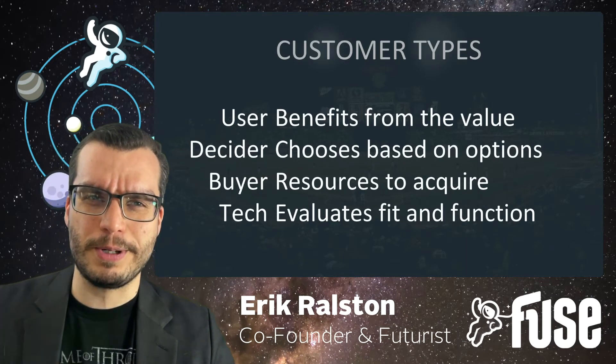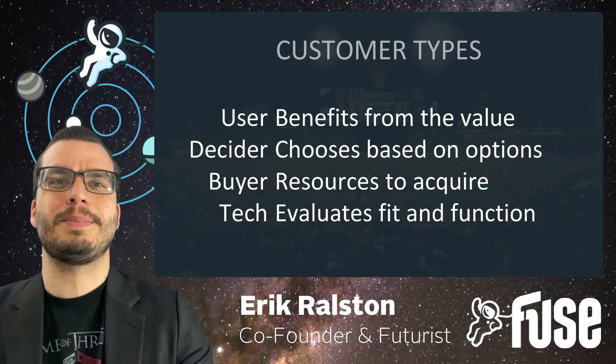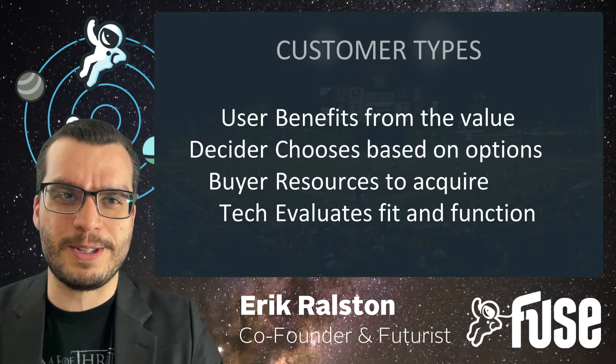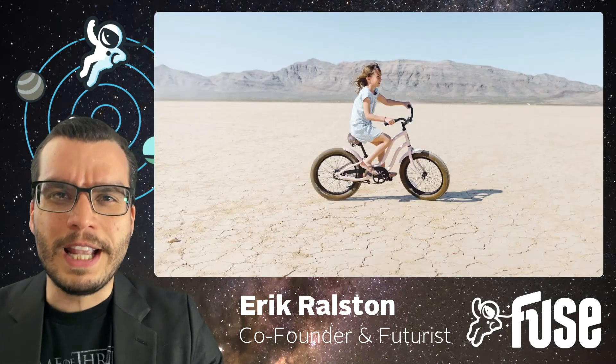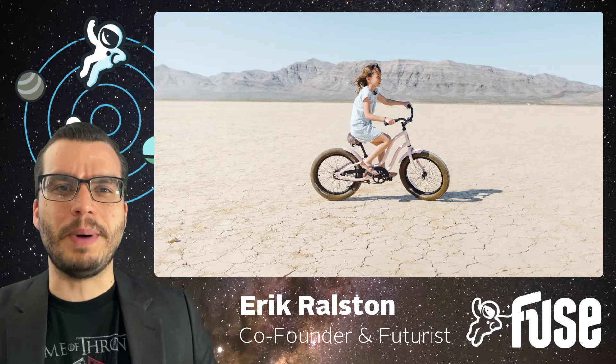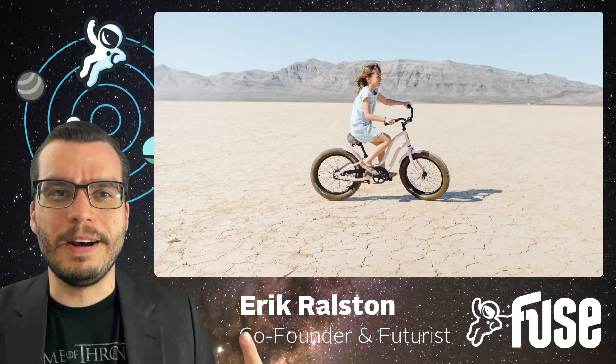Surely simple purchases couldn't possibly have more than one customer type — that's insane. Like what if somebody is just buying a bike for their kid? How hard is that? Is there really a team of people involved?